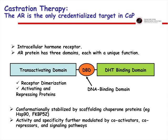Because the androgen receptor is so important in castrate-resistant disease, we have to understand its role and biology. It's an intracellular hormone receptor, part of the steroid receptor superfamily, with three basic domains: an N-terminal transactivating domain, a DNA binding domain, and a ligand binding domain. Androgen binds the ligand binding domain, leading to a conformational change, and the receptor then translocates into the nucleus where it binds to androgen response elements in promoters to transactivate different genes.